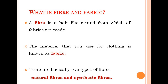Natural fibers, as the name suggests, are those that are found in nature. From animal sources, we get natural fiber — for example, wool from sheep. From plant sources, we get cotton, taken from nature itself. Synthetic fibers are prepared by humans with the help of chemical compounds or chemical reactions.